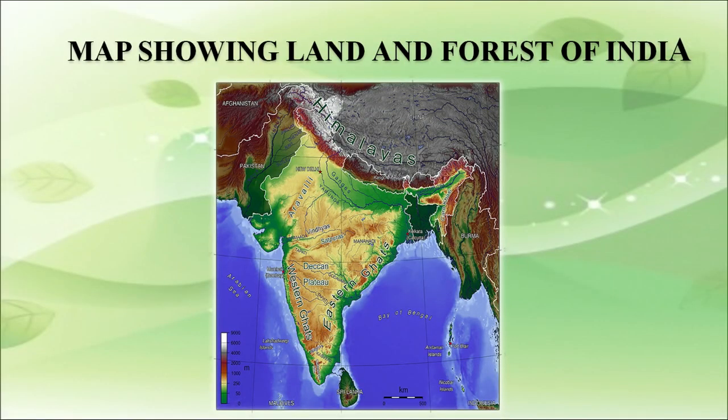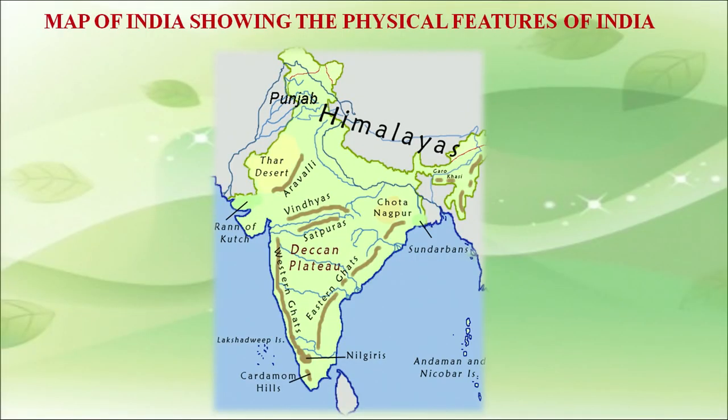India is one of the 12 mega biodiverse regions of the world. India's land area includes regions with some of the world's highest rainfall to very dry deserts, coastline to alpine regions, and river deltas to tropical islands, as shown in the map of India's physical features in the next slide.